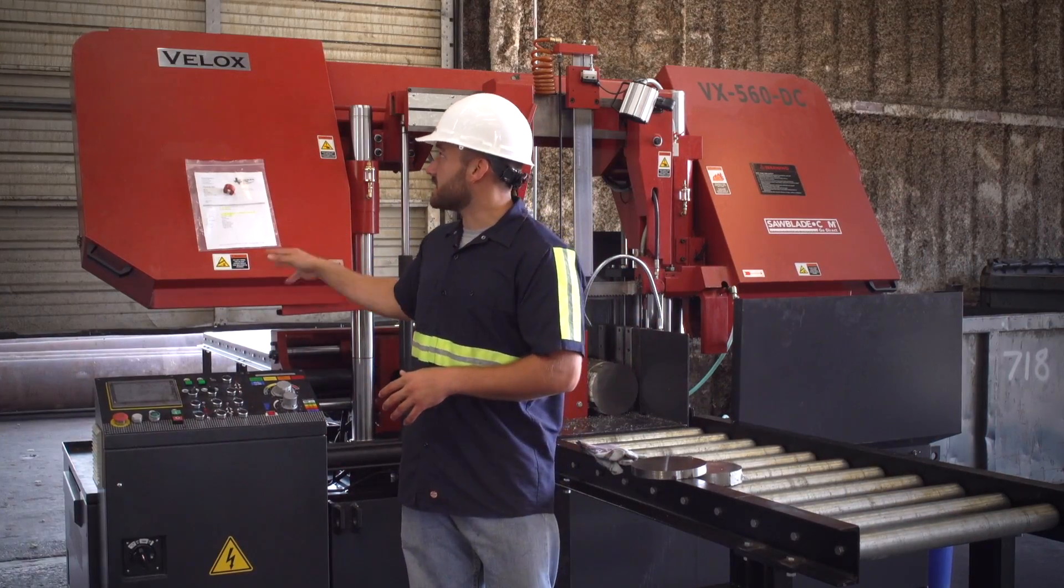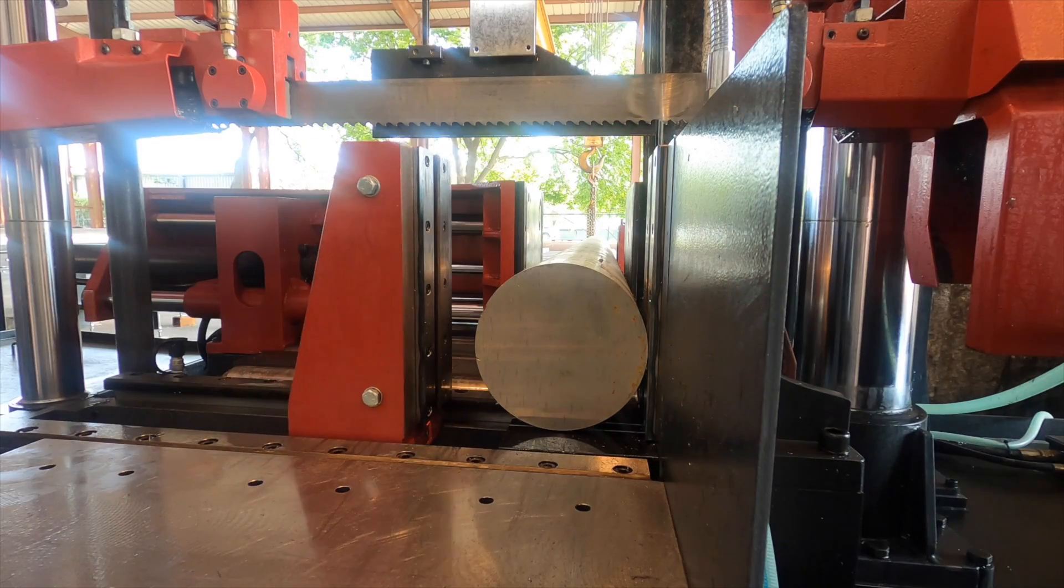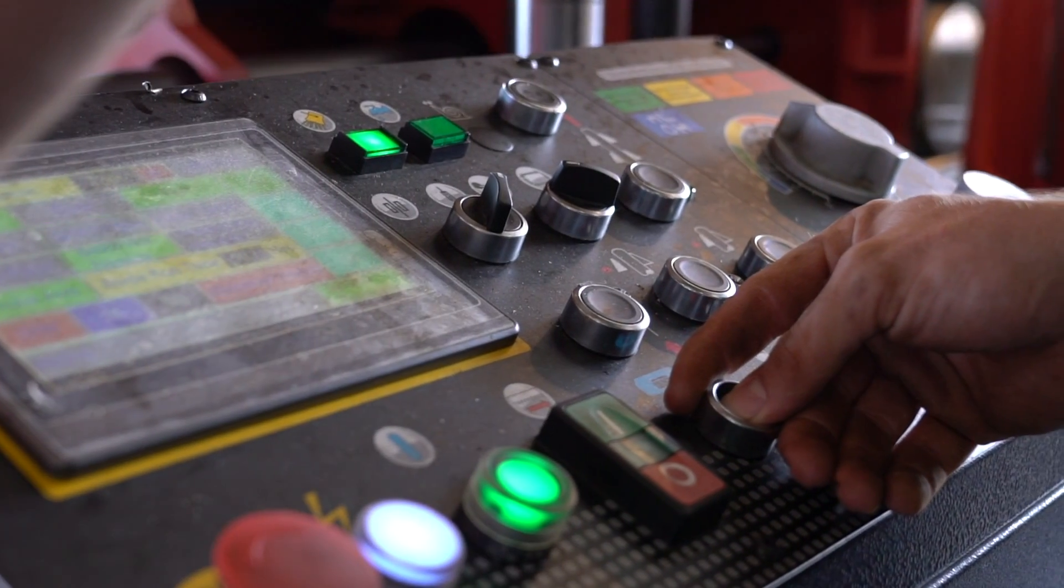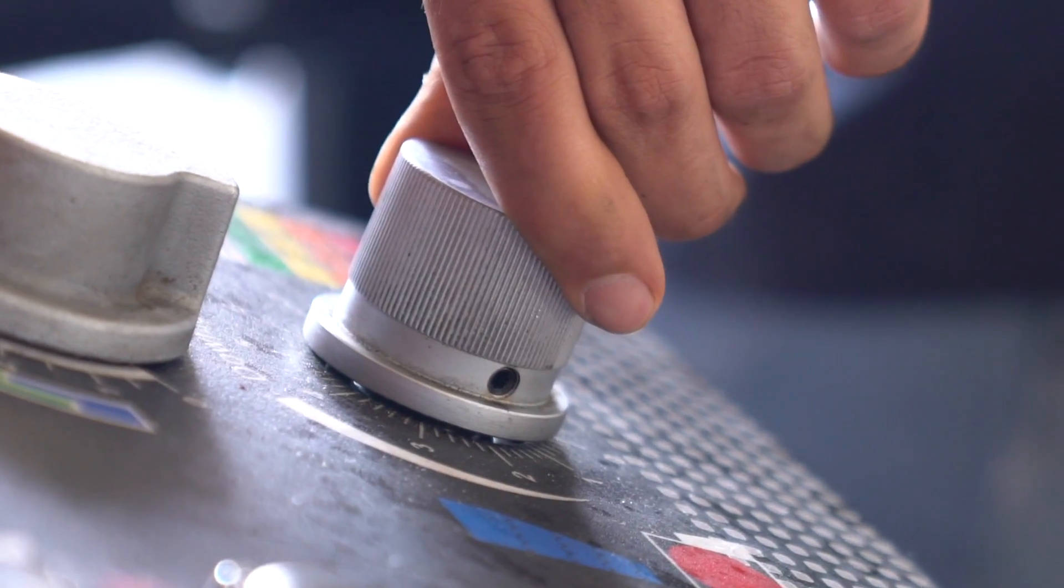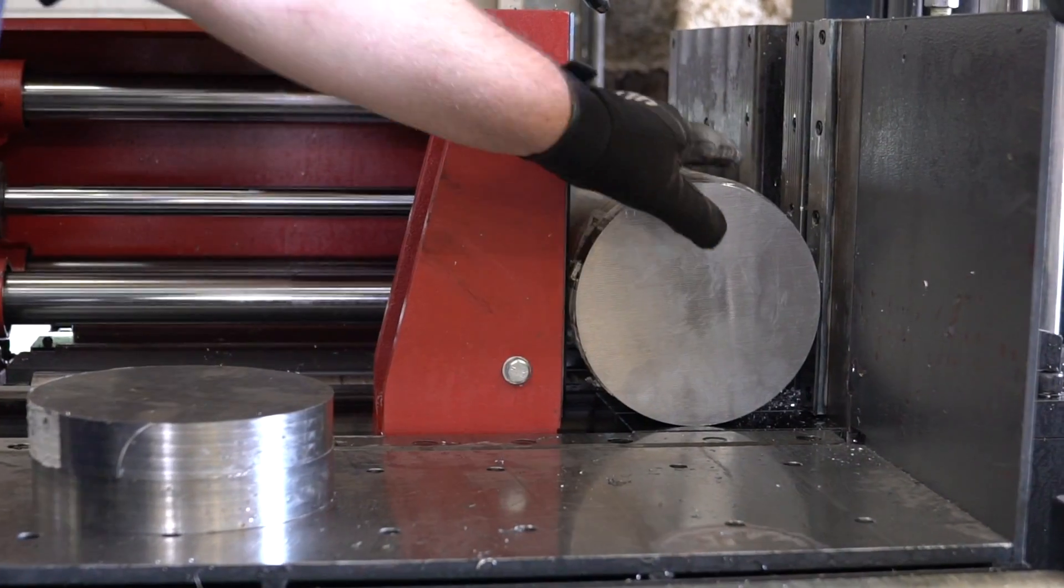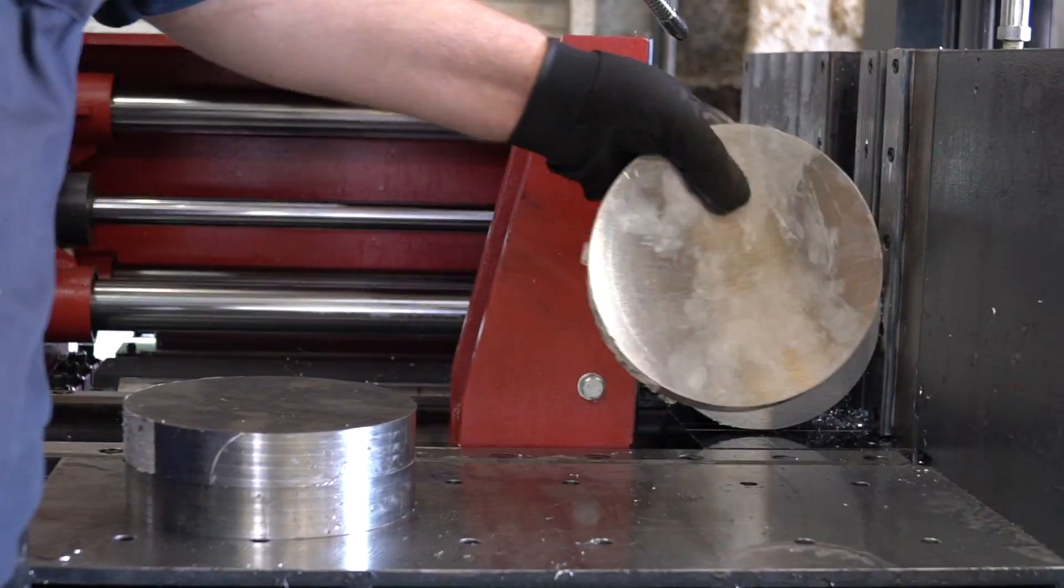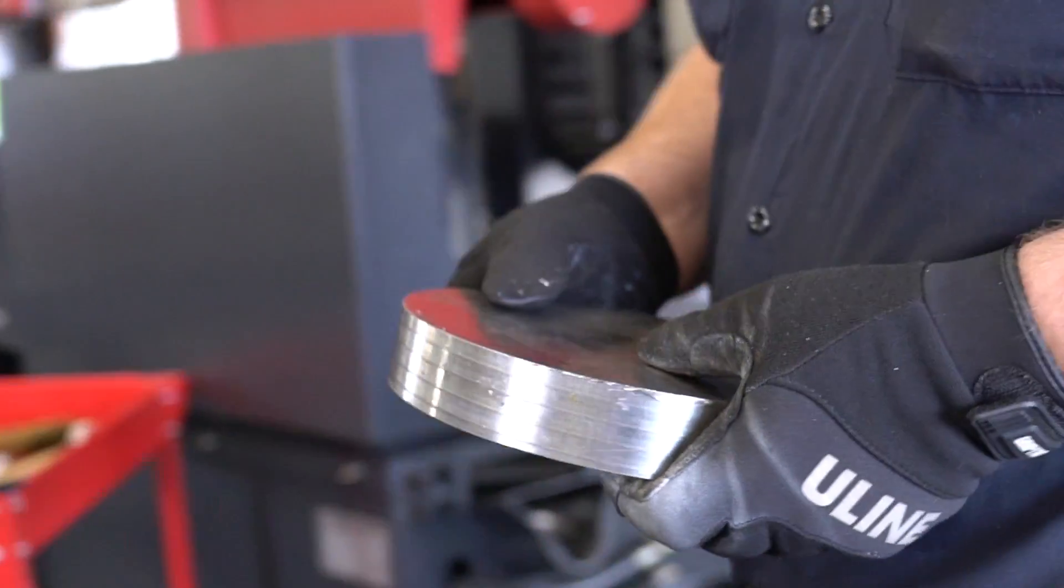This VALOX 560 machine is a full CNC capable machine so we'll be able to input the job at an inch and a quarter cut for 55 cuts into the machine and essentially be able to walk away, keeping efficiency in a timely manner to get the job back out to the customer.